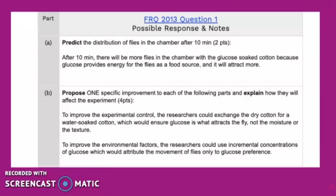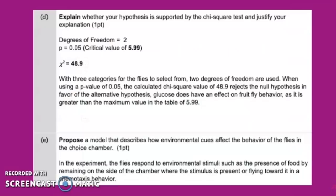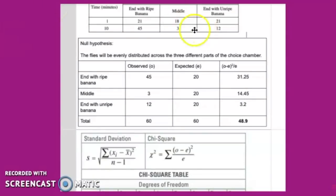If we look at a potential problem with chi-square analysis on an AP Biology FRQ, you might want to look at the FRQ from 2013, question number one. This one had to do with flies in a choice chamber. In the next part of the problem, you're asked to explain whether or not your hypothesis would be supported by the chi-square test and justify your explanation. Here's the data that is given to us from the experiment, and our null hypothesis: the flies will be evenly distributed across the three different parts of the choice chamber.